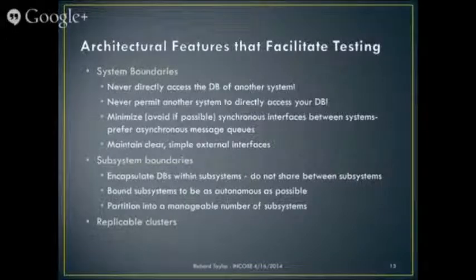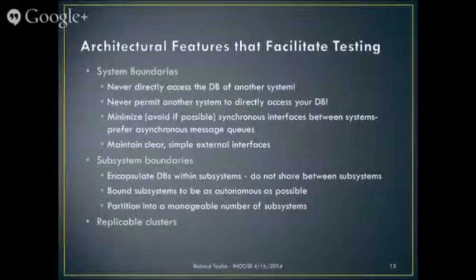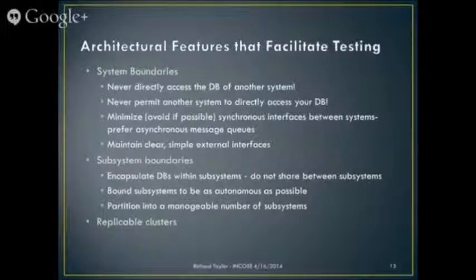I like to avoid synchronous interfaces between systems, because that creates very tight bonding. If you can make them asynchronous, they'll be stronger — and asynchronous does not mean slow. You can pull as fast as you want, but if you post a request and then sit there and wait, you're dependent on the other system to be up at the time you need it. No matter what they've committed to, if you can't control the design, you can't control whether it's really up or not. The same rules apply to subsystems, but a little softer, because you're controlling the design of both sides. But if you encapsulate the data and are as autonomous as possible, you should be able to get those subsystems independently testable.